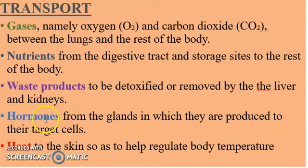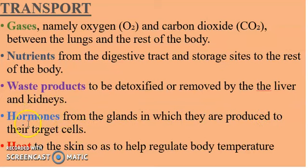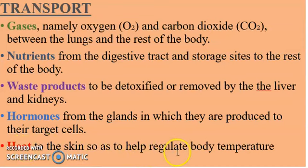Blood transports hormones from the glands in which they are produced to their target cells. Hormones are chemical messengers that are secreted directly into the blood and sent to vital parts of the body. Blood also transfers heat to the skin so as to help regulate the body temperature.